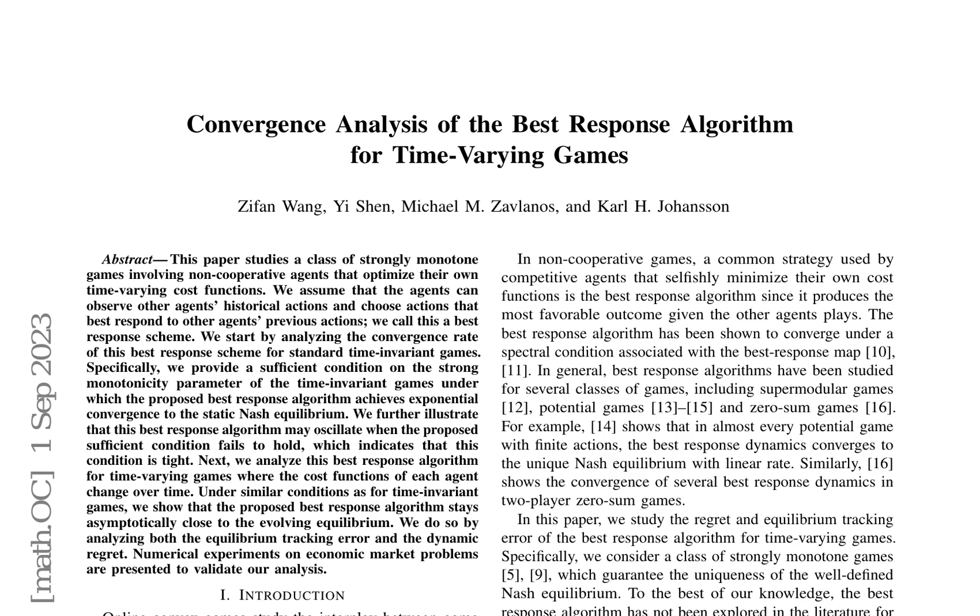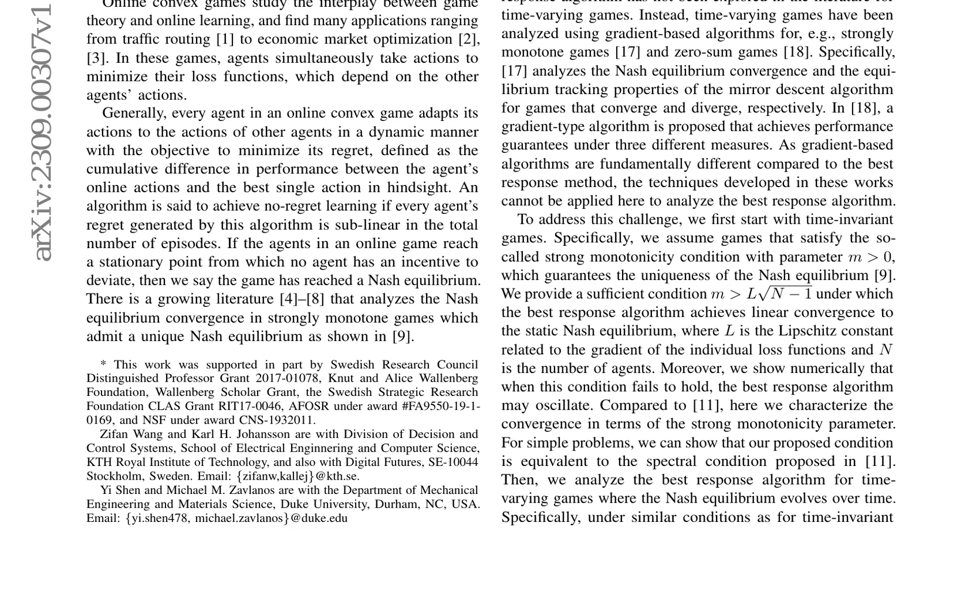The authors then extend the analysis to time-varying games, showing that under similar conditions, the best-response algorithm stays asymptotically close to the evolving equilibrium. The paper also analyzes both the equilibrium tracking error and the dynamic regret, providing a comprehensive understanding of the algorithm's performance in time-varying games.